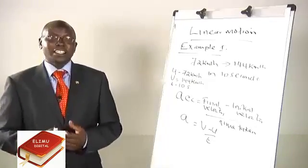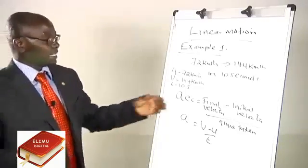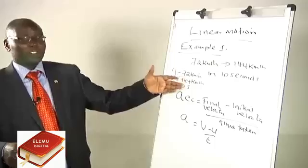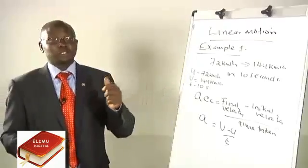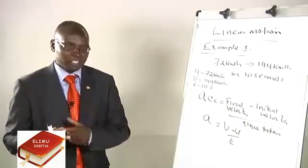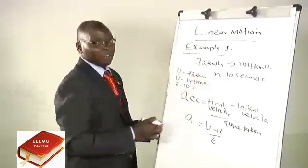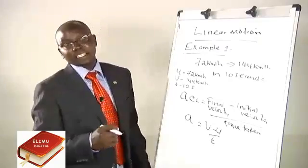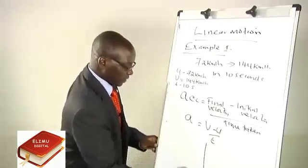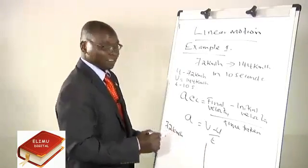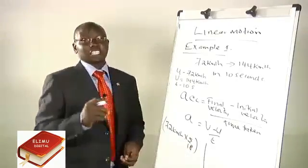What we need to do is calculate the acceleration. Since we normally work with SI units, we cannot work with kilometers per hour, so we must first convert the velocities into meters per second. For 72 kilometers per hour, we multiply by 5 over 18.